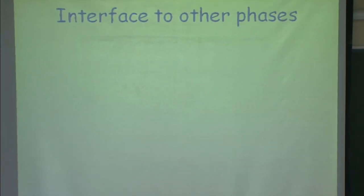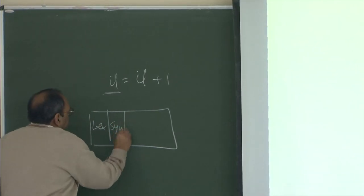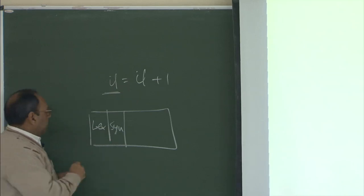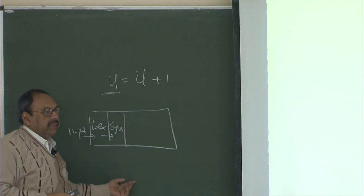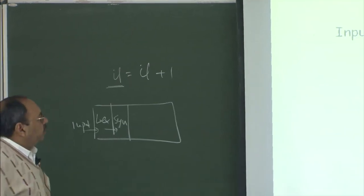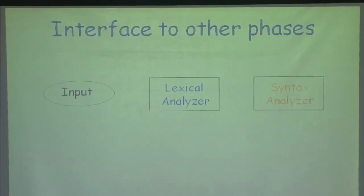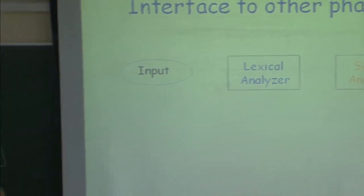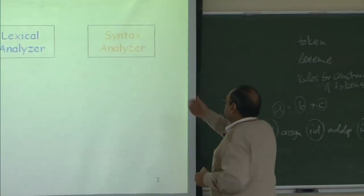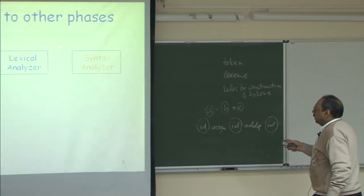Let us see how this interfaces with other phases of the compiler. The lexical analyzer is the first phase, followed by the syntax analyzer. The lexical analyzer deals with two entities: the input and the syntax analyzer. It also interacts with the symbol table where it puts all the information. The lexical analyzer feeds information to the syntax analyzer and takes input from the sequence of characters. Assume that the syntax analyzer is the one driving the whole process — it says 'give me a token' and asks the lexical analyzer for a sequence of tokens.